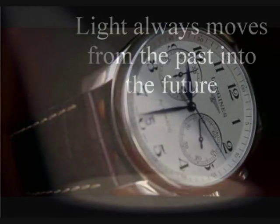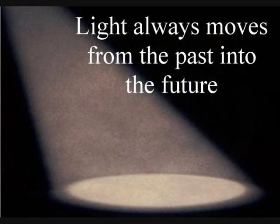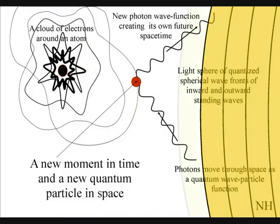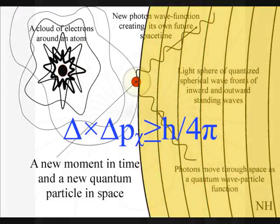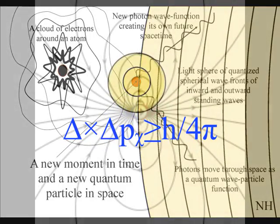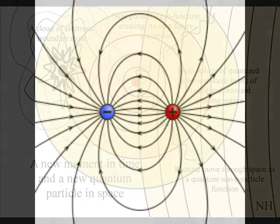Light always moves from the past into the future. This forms an electromagnetic arrow of time with photon oscillations or vibrations forming electric charge, with light waves moving outwards into the future, never the past.